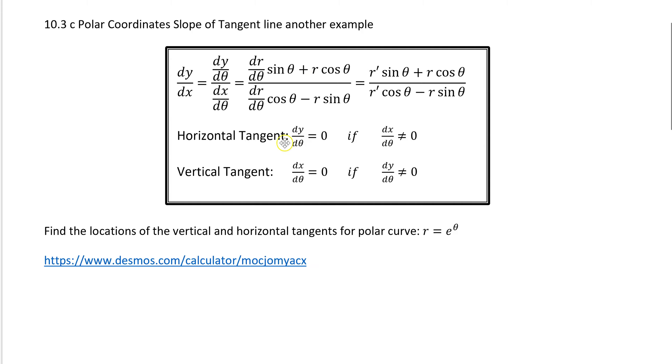If you remember from before, we had horizontal tangents when our dy/dθ is equal to 0, if our dx/dθ did not equal 0. And then we also had a vertical tangent when our denominator, dx/dθ is equal to 0, if dy/dθ also does not equal 0.